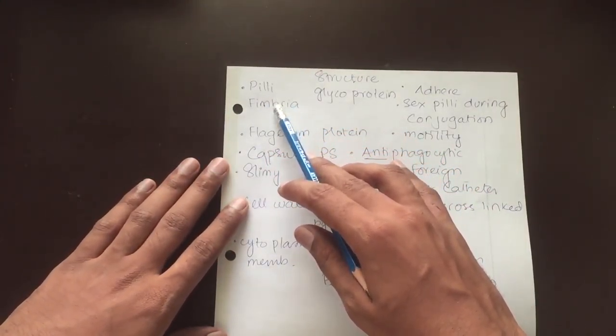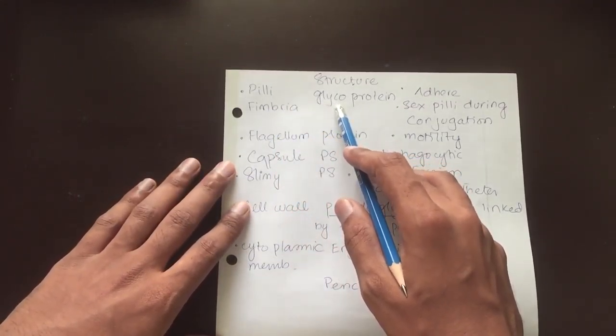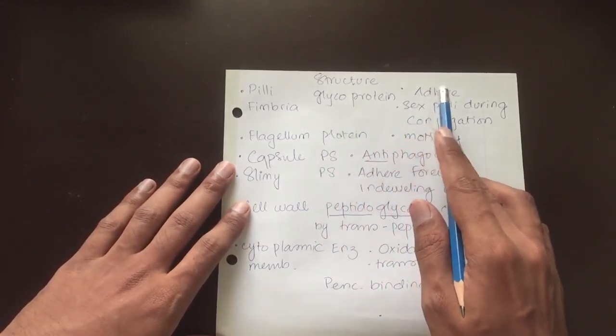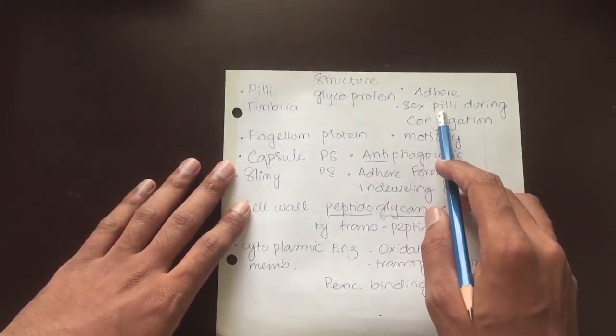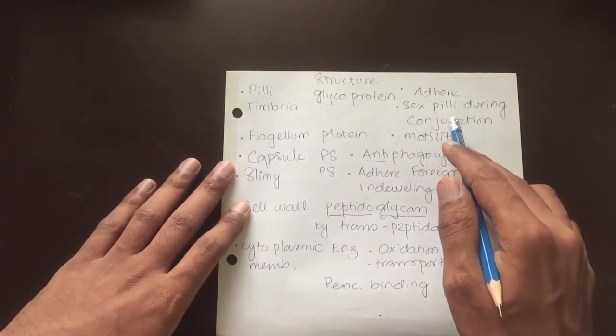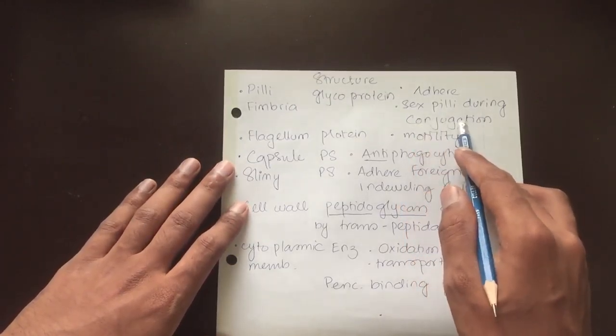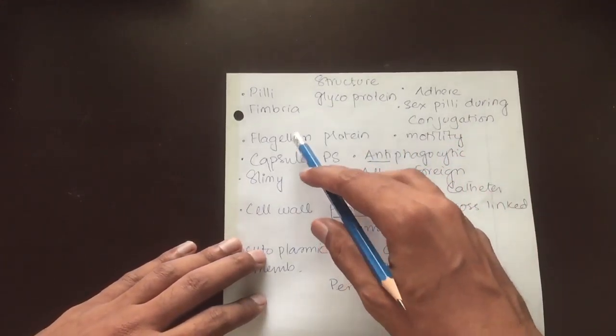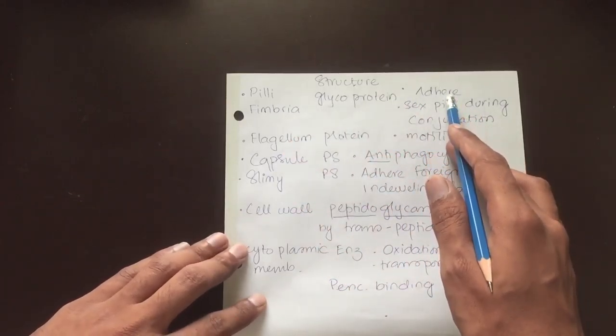Pili or fimbriae and flagellum are cellular appendages. The pili and fimbriae are actually glycoproteins and they are important in adherence and conjugation. Pili adhere and also help in sexual reproduction, that is conjugation, a mode of bacterial reproduction. Fimbriae help in attachment. Both have the common function of adherence, and pili have an additional function of helping in conjugation.